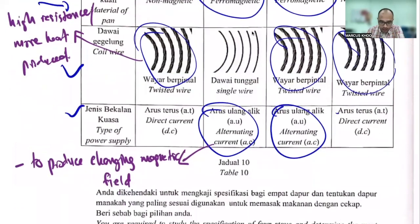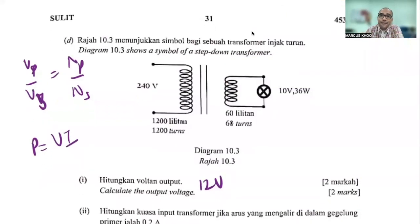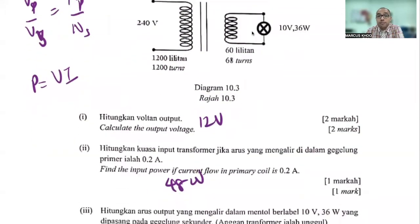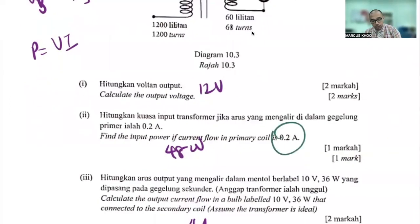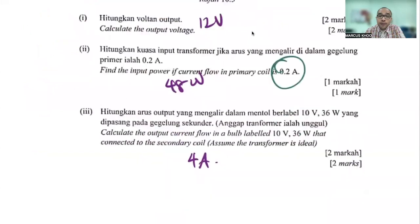Next is another transformer question. Calculate the output voltage — the answer is 12 volts. The input power, given voltage and current, is 48 watts. Finally, calculate the output current for a bulb labeled 10 volts and 36 watts — the answer is 4 amps.